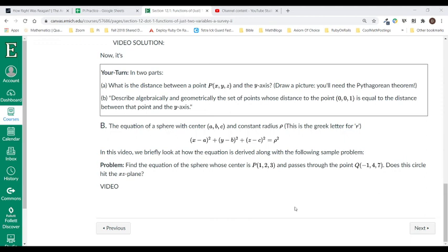Here we go. Find the equation of the sphere whose center is 1, 2, 3 and passes through the point Q minus 1, 4, 7. Does this circle hit the X, Y plane? Okay, I'm going to go back here.